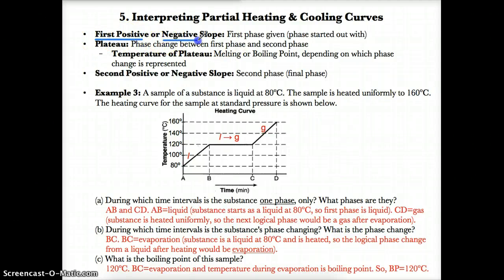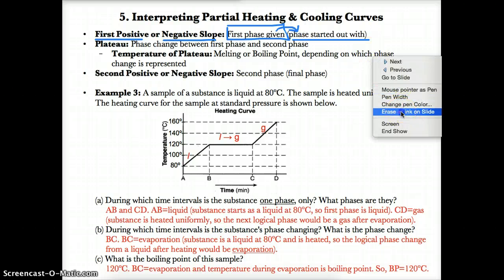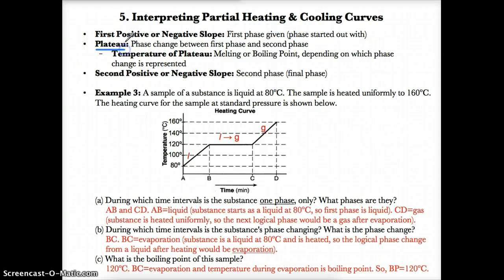The first positive or negative slope you encounter will always be the first phase given — it's the phase you start out with according to the problem. It's not necessarily a gas or a solid; it depends on what the problem tells you. The first and only plateau you run into on a partial heating or cooling curve is the phase change that occurs between the first and second phase.